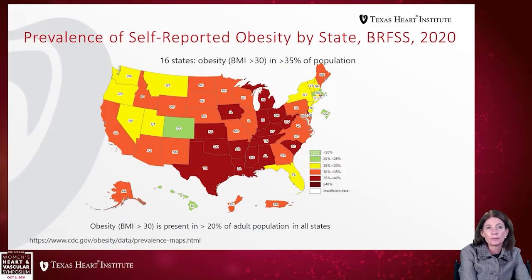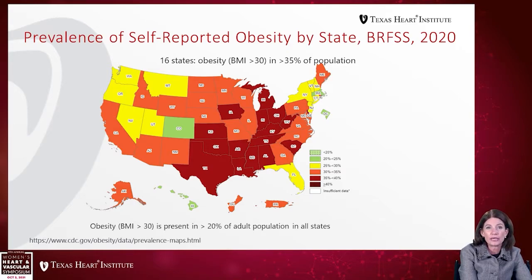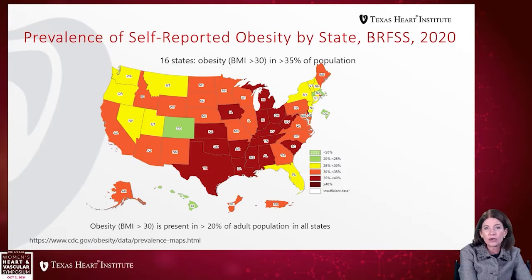Looking at the prevalence of self-reported obesity from the behavioral risk research study, the most recent data from 2020 shows obesity rates in states. There are now 16 states with BMI over 30 in greater than 35% of the population. Four states joined this designation this year, and Texas was among them. The highest rates are in the south and midwest, while the lowest weights are in Colorado, Hawaii, and Massachusetts.